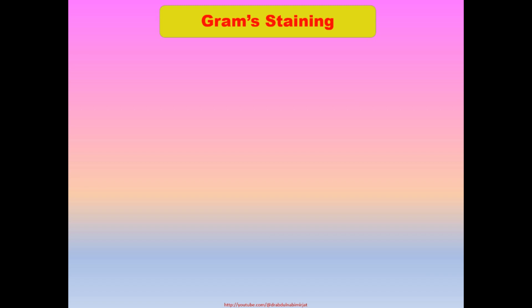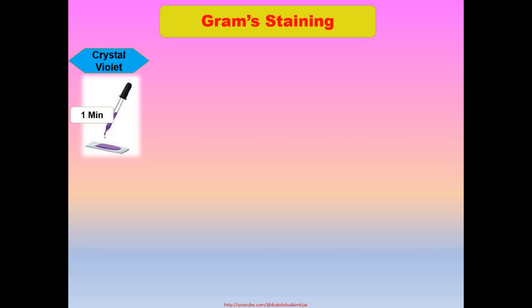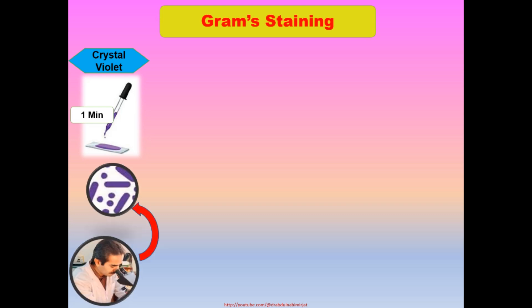So let's perform the Gram staining procedure. First of all, we will apply crystal violet for 1 minute. After 1 minute, we will wash the slide with water. If we observe this slide under the microscope, all the bacteria will retain the primary dye and show the purple-blue color.